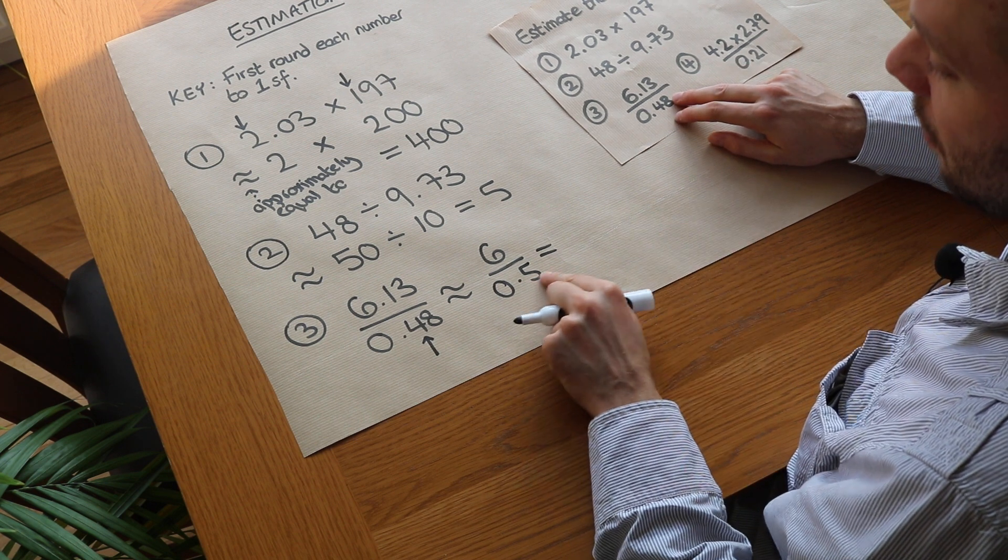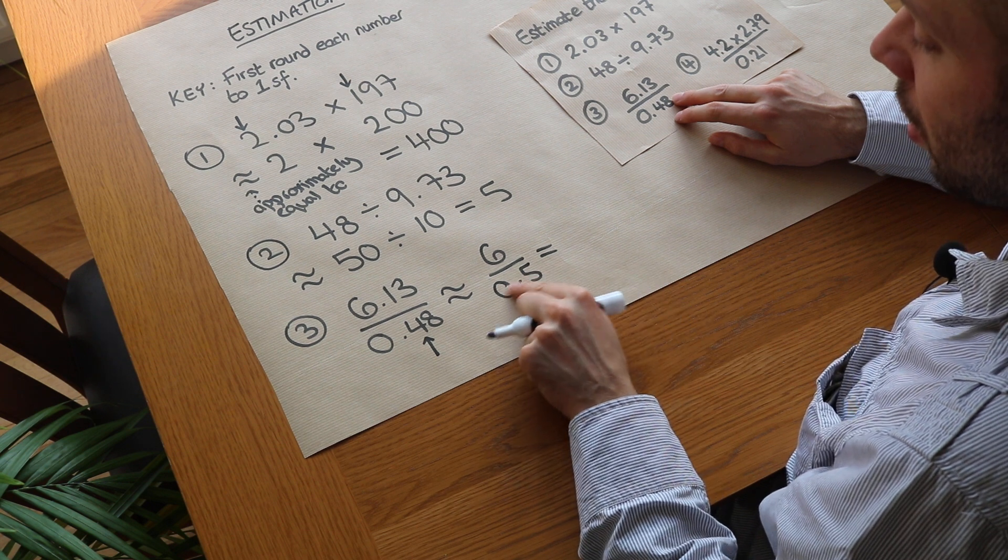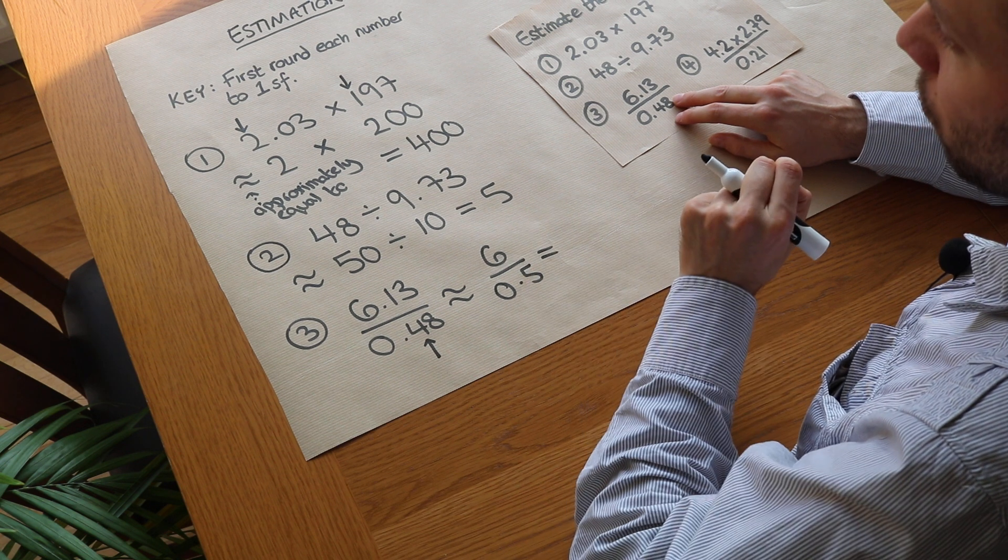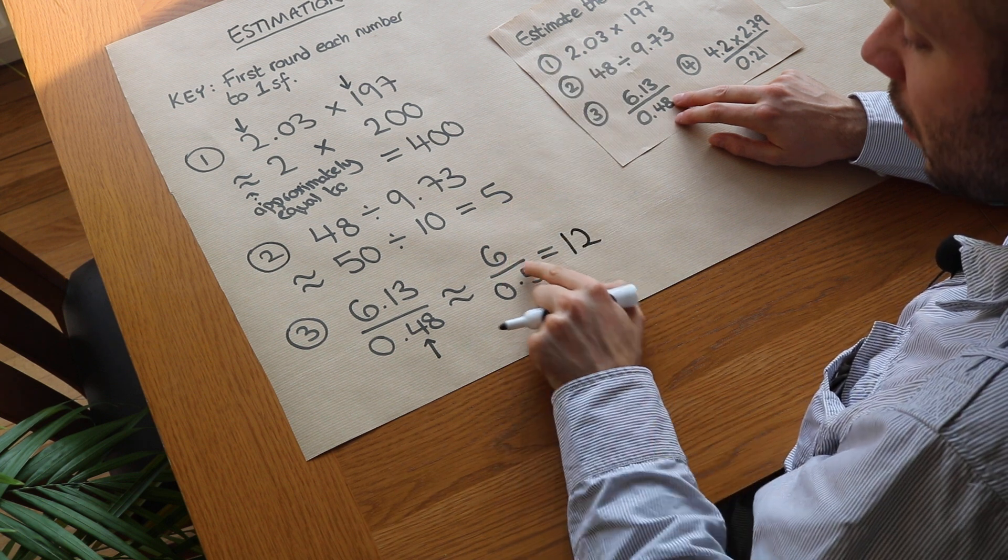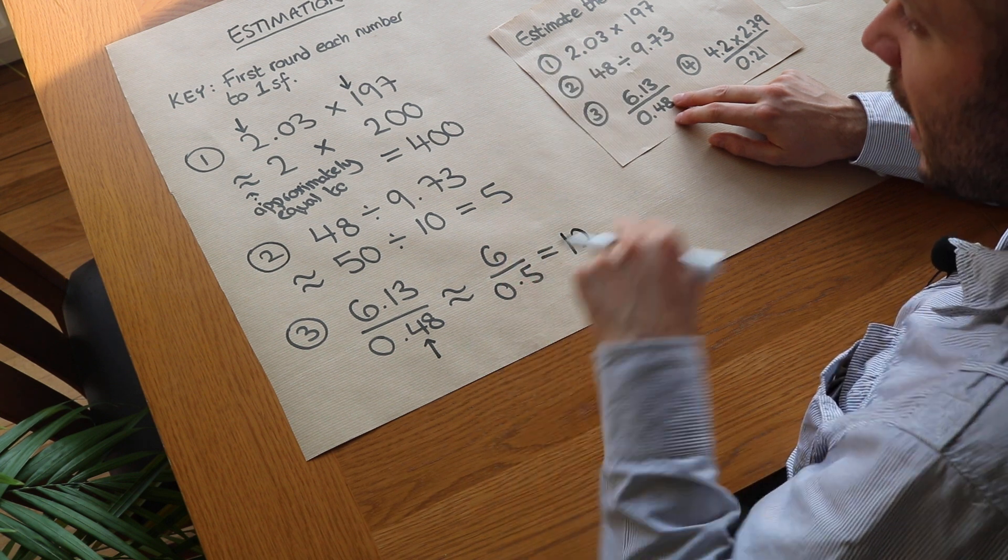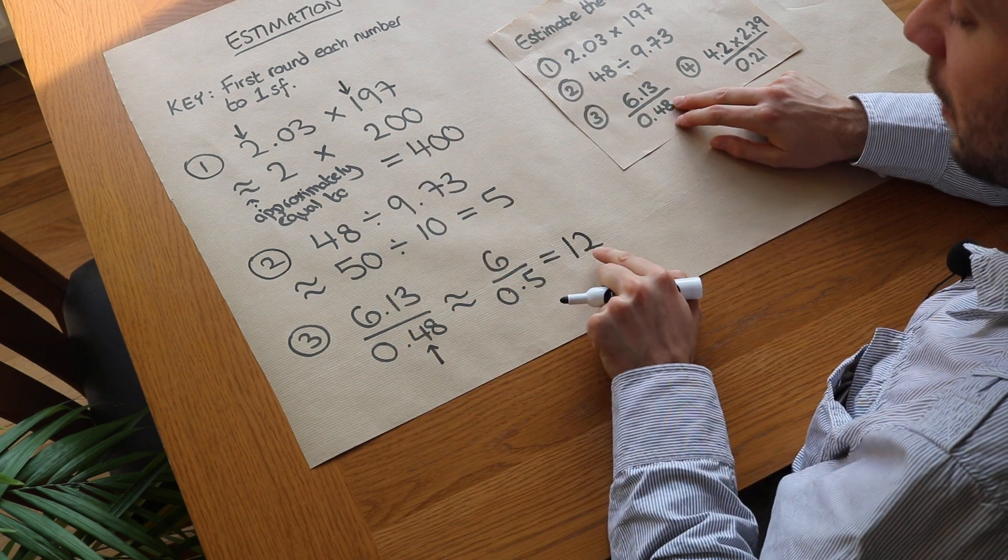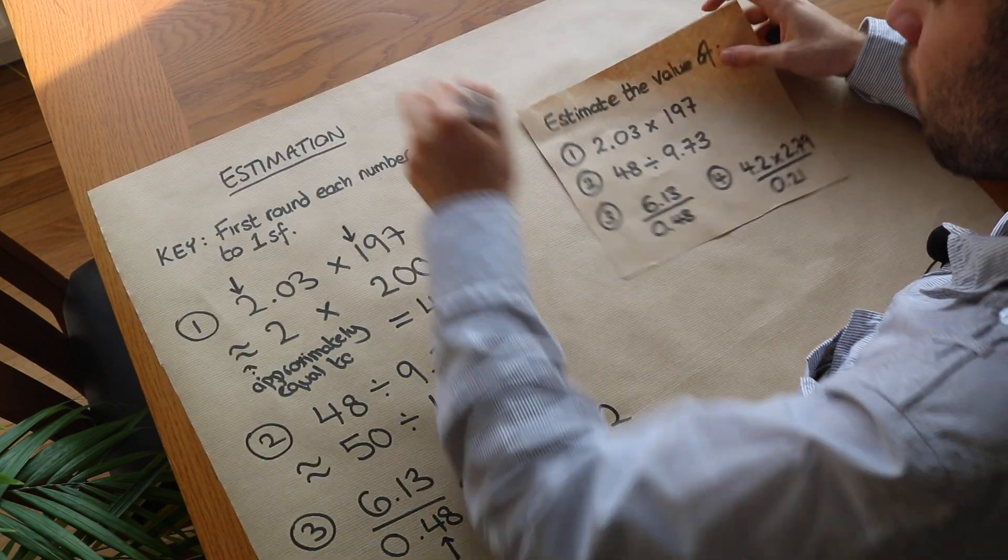Now what happens when you do 6 divided by 0.5? Well 0.5 is just the same as half, so what we're asking is how many times does half go into 6? Well half goes into 1 whole twice, so it goes into 6 twelve times. So remember when we divide by a half we actually end up multiplying by 2, so this becomes 6 times by 2 which is 12.